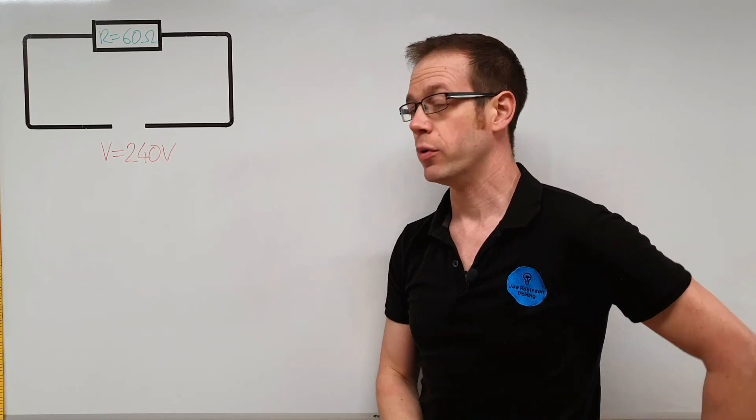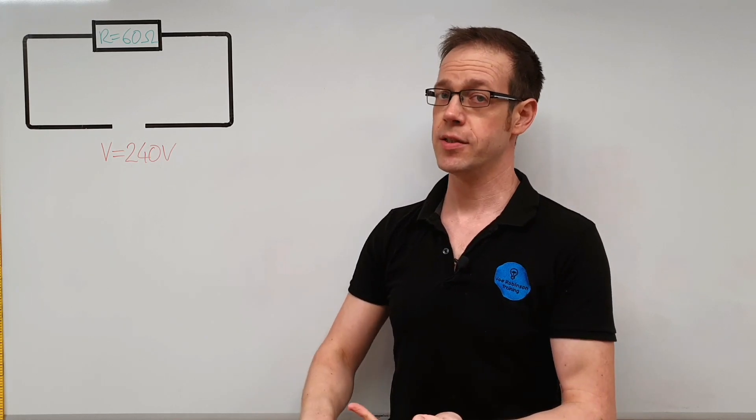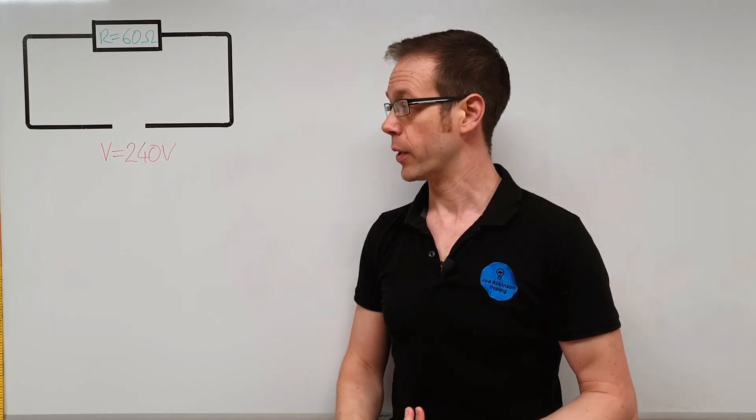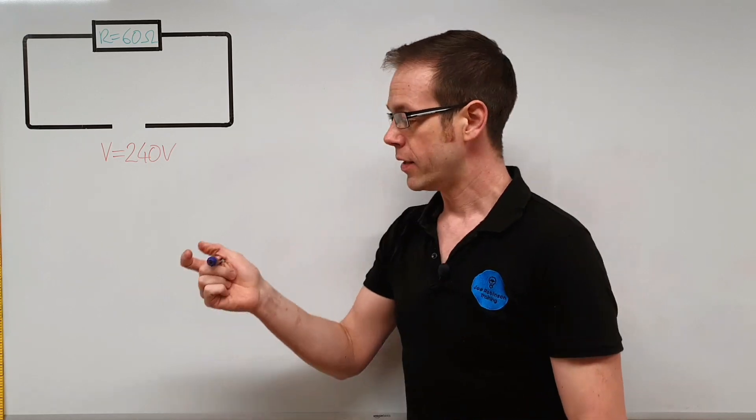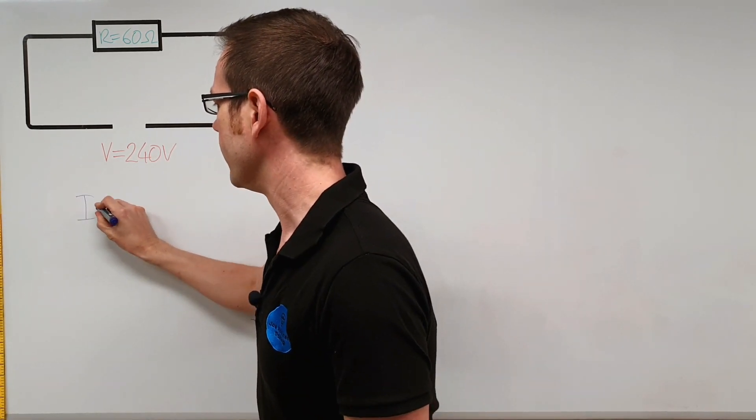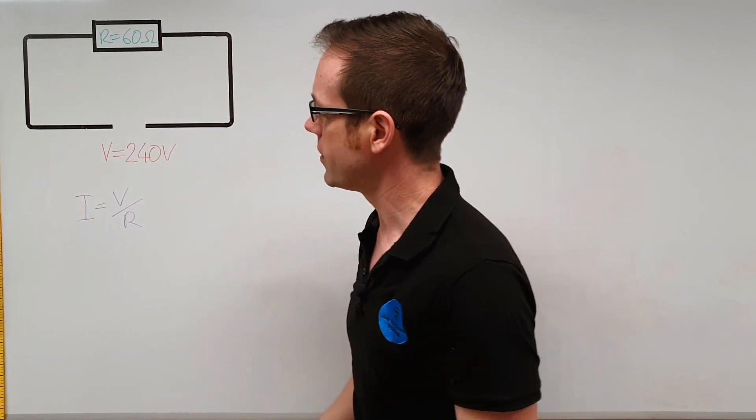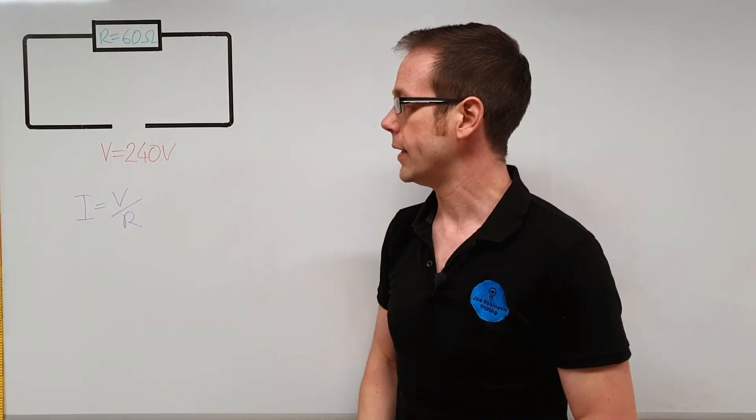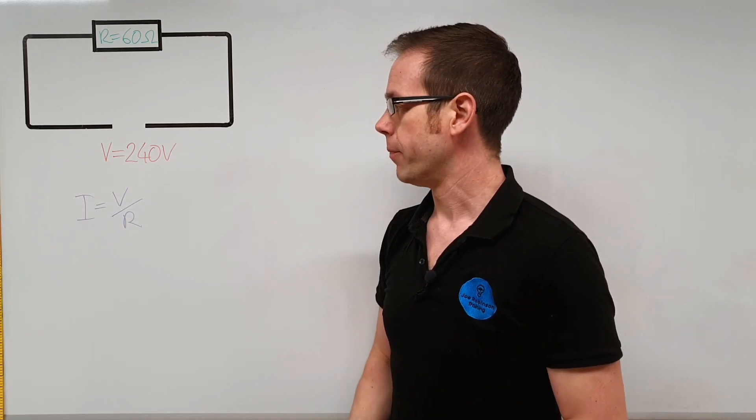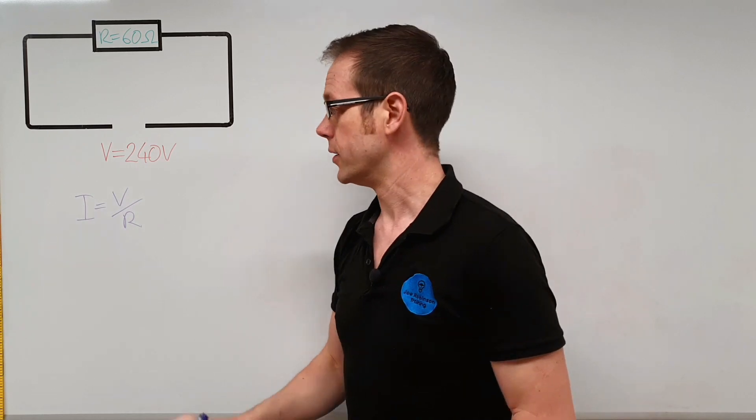What we'll do is figure that out first, and of course to do that we've got voltage, we've got resistance, and we want to find current, so we're going to go back to our old friend Ohm's law. Let's put that on the board. We've got the formula I is equal to V divided by R. So there's our Ohm's law formula, I equals V over R.